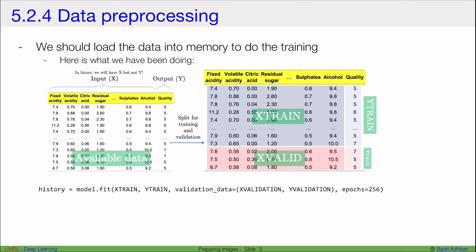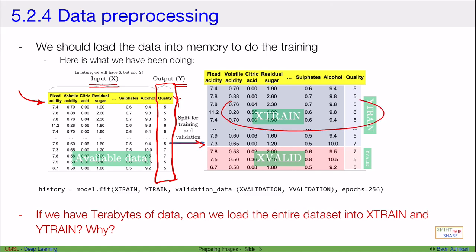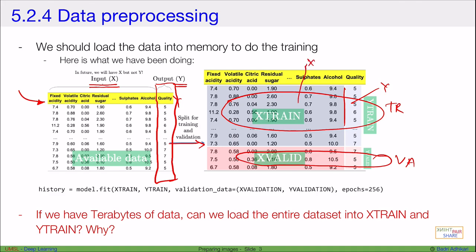Now let's talk about data pre-processing before neural network based training. If we have a table of data, what we do is split the data into X and Y — everything except your output column becomes X and the rest becomes Y. We then further split this into training data and validation data. Within training we have X_train and Y_train, and within validation we have X_valid and Y_valid.